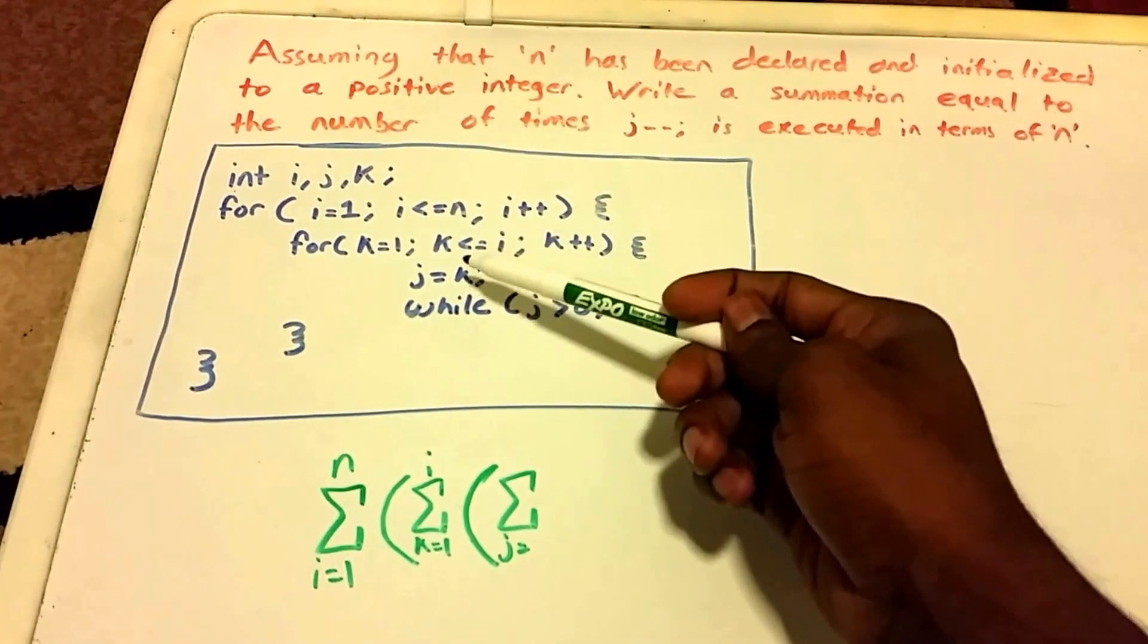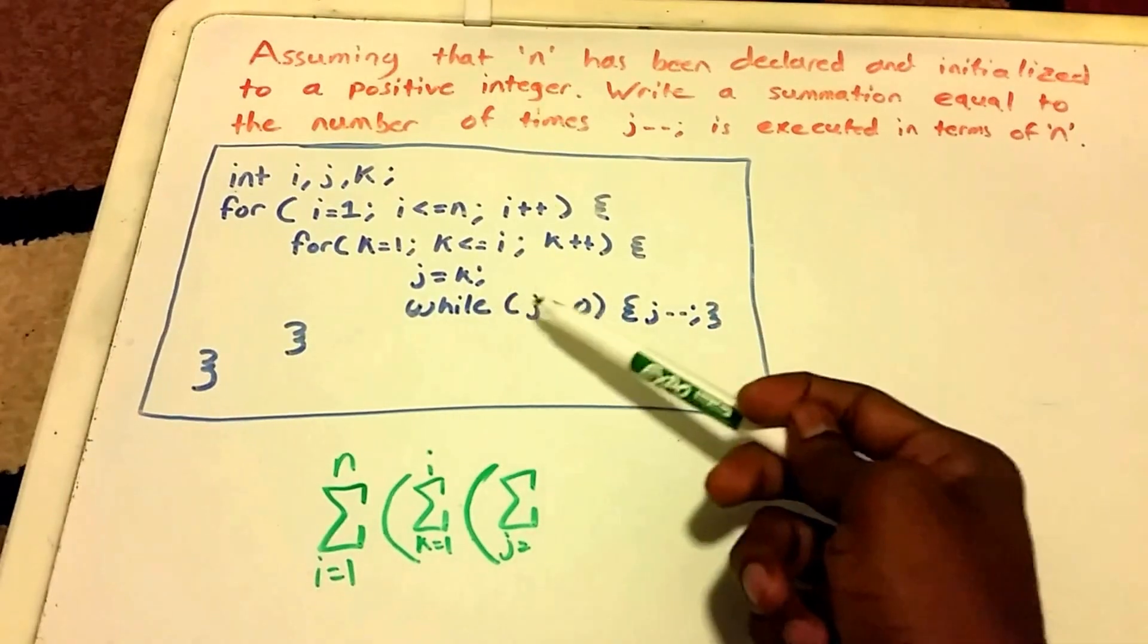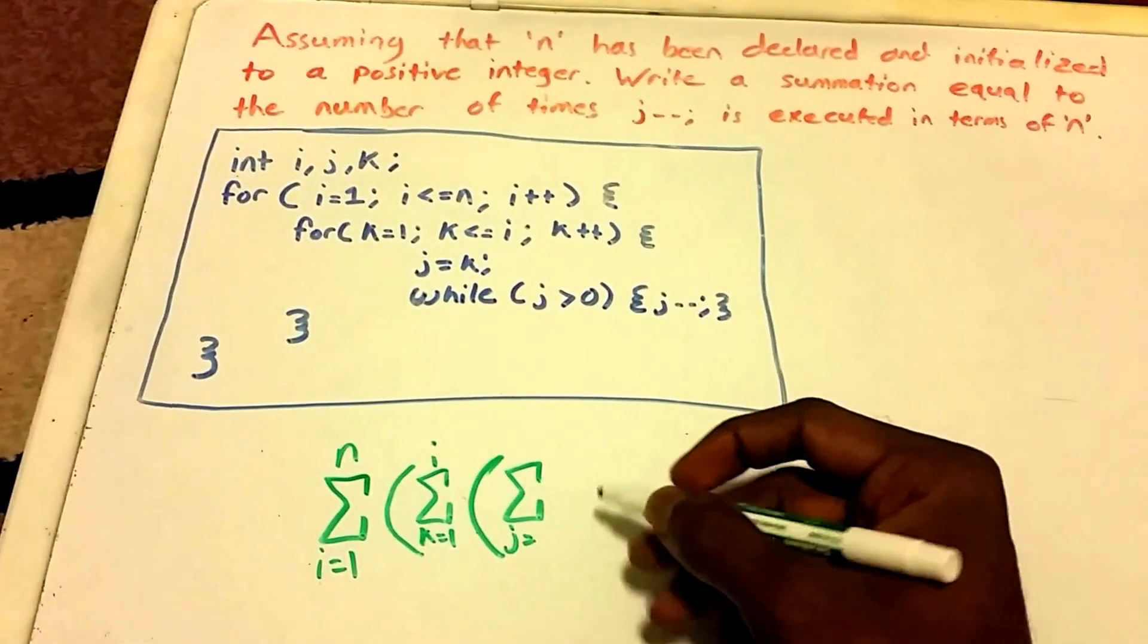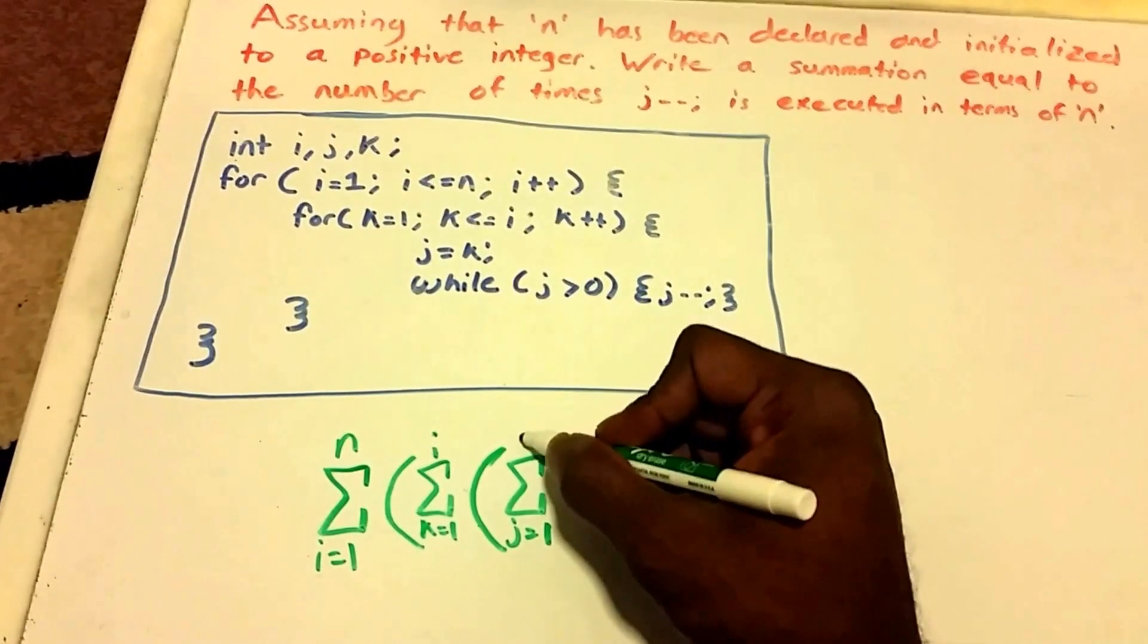And then our k is going to increment again, it's going to run three times. So then this while loop runs three times, and so on and so forth. So our summation runs from j equals one to k, all right?